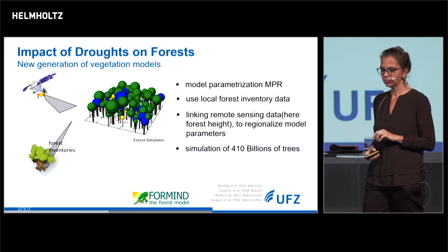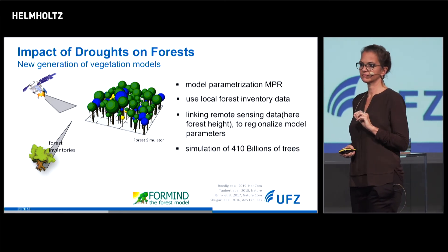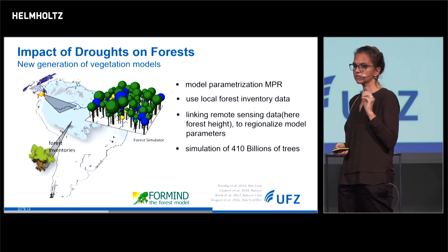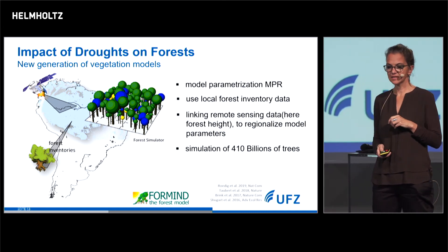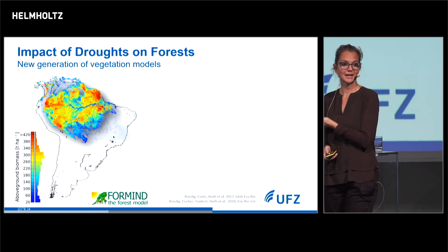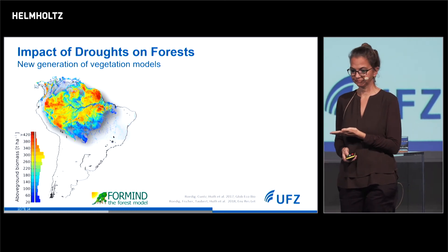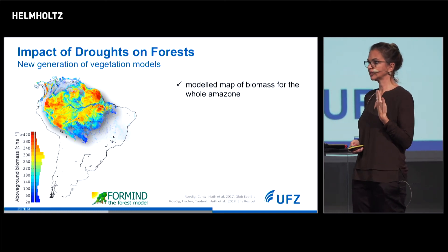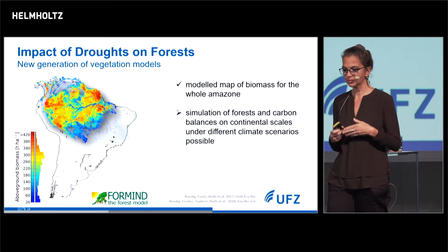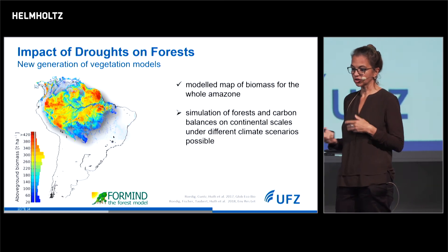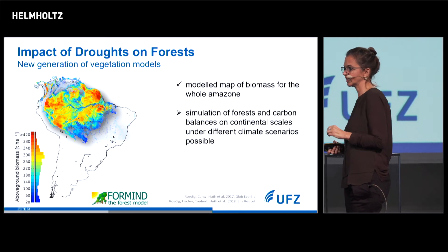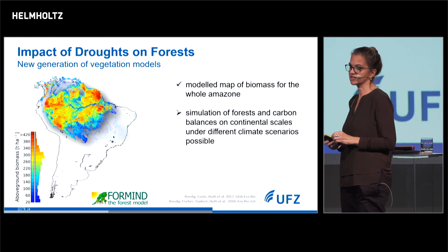We could then simulate 400 billion trees at the same time for the whole Amazon — the very first time a mechanistic model could produce results like that. This is a map of biomass in the Amazon that we have already achieved. In the future, we will use this model to simulate forests and carbon balances on continental scales and explore whether forests stay as a carbon sink.